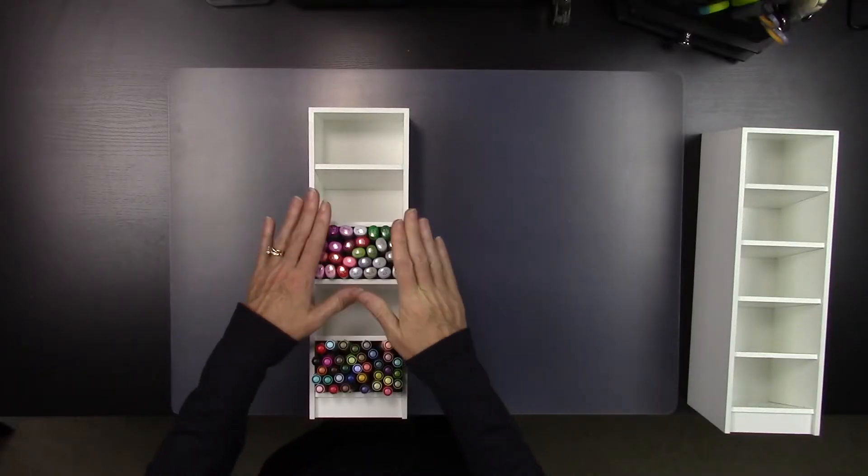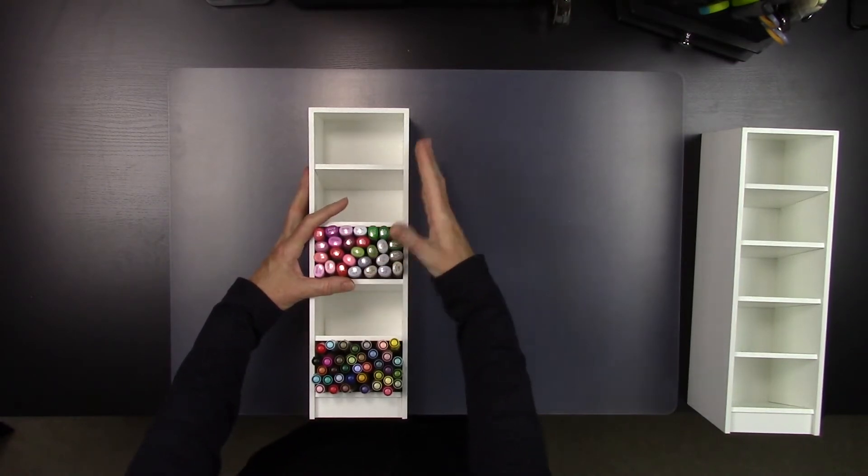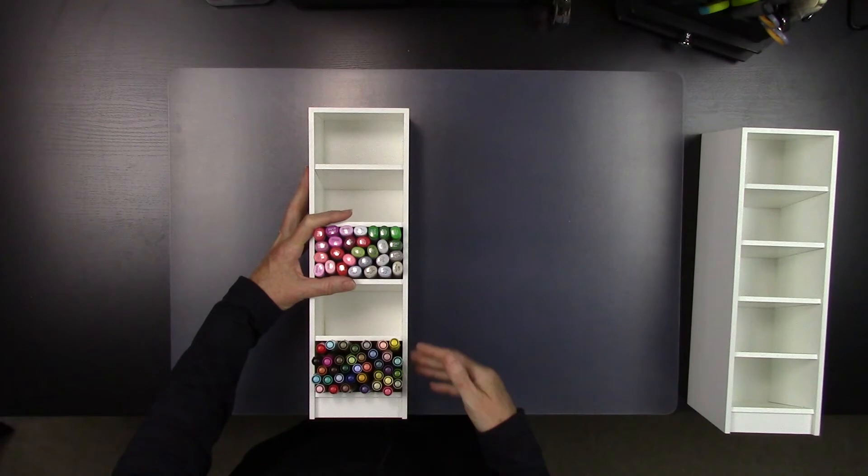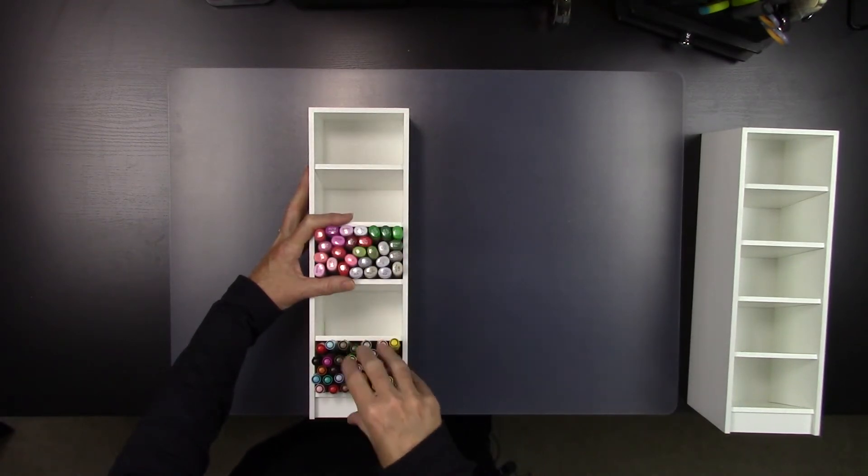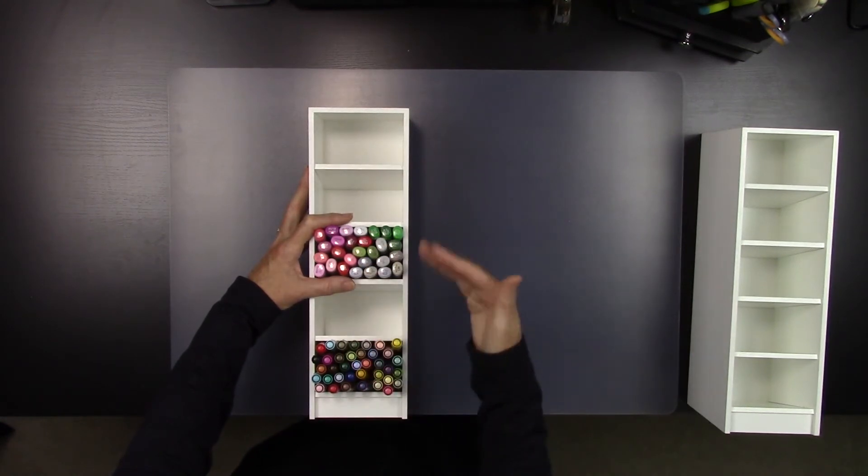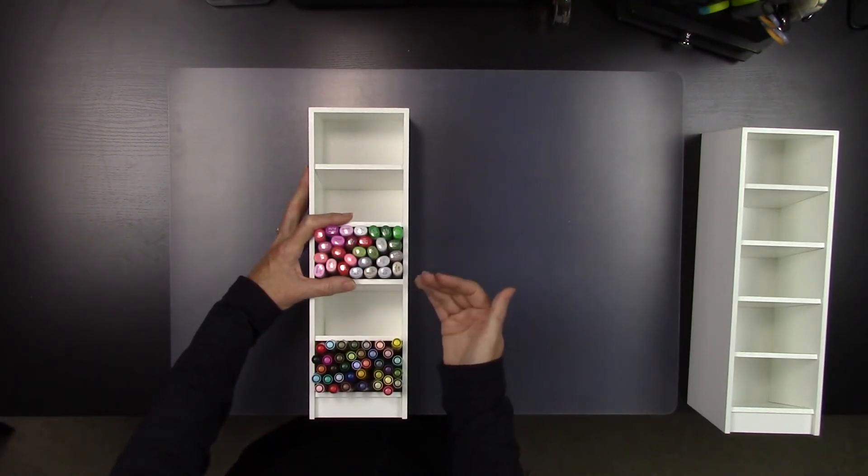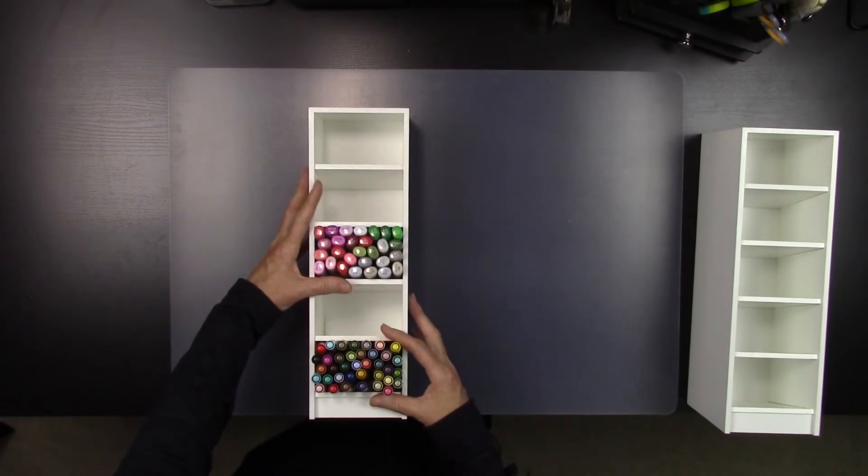The product was originally made to hold Copic markers and that's what you see here. It holds 140 markers, 28 in each one of these five cubbies. It will also hold 90 total Spectrum Noir markers. Those are markers made by Crafter's Companion, great company out of the UK. And it will hold 18 in each of the cubbies.